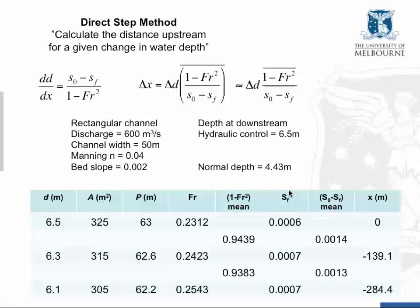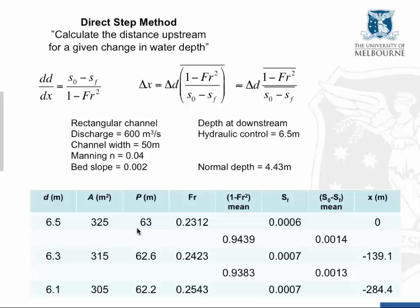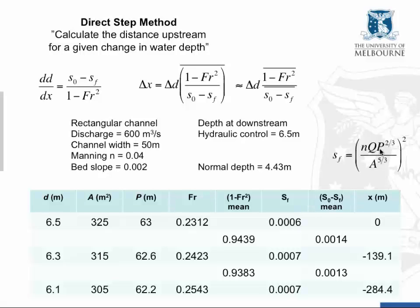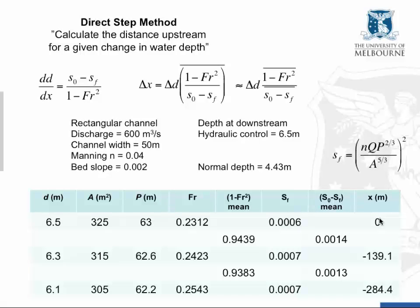Knowing the discharge, we can calculate the Froude number to be 0.2312. We can also calculate the energy gradient using the flow resistance equation — Manning's equation — rearranged to give the energy gradient as a function of discharge, wetted perimeter, cross-sectional area, and Manning's roughness coefficient. This starting point is at the downstream end of the profile, at distance 0 meters.